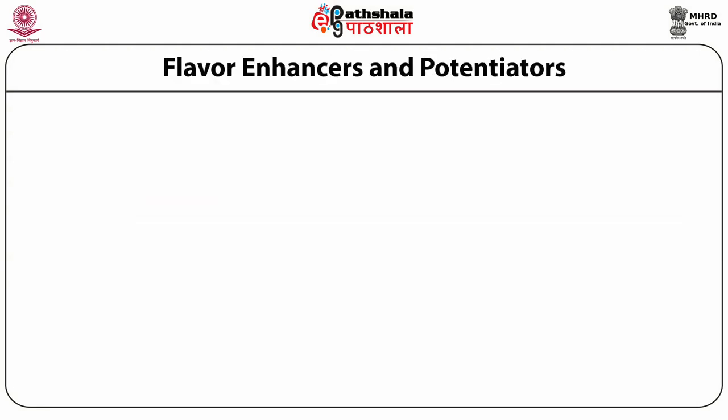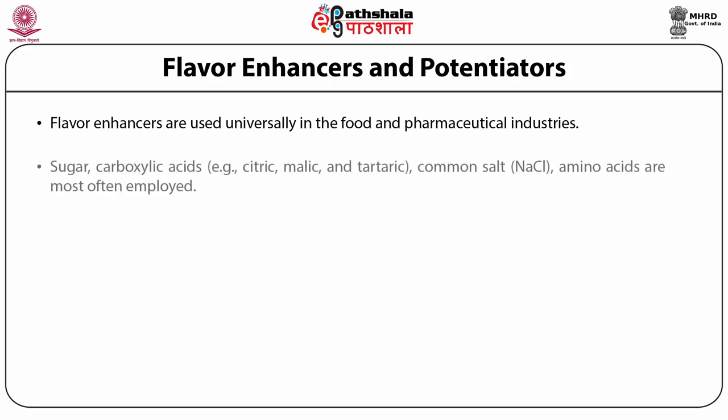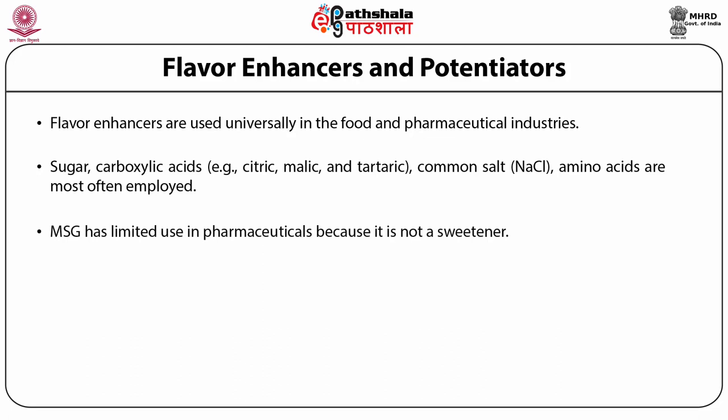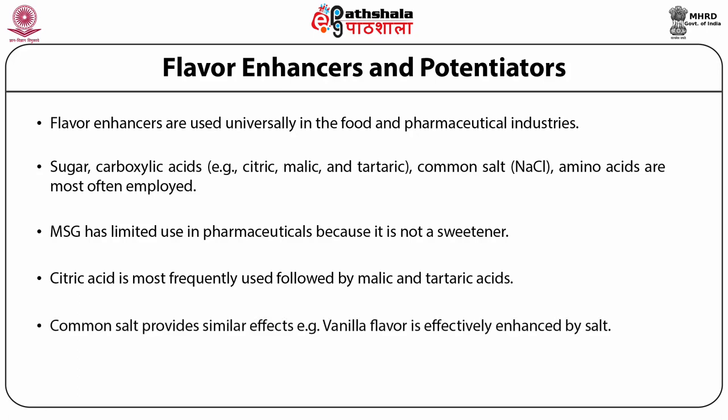Apart from flavors, there are certain flavor enhancers and potentiators that help in enhancing the efficacy of flavors used. Flavor enhancers are used universally in food and pharmaceutical industries. Sugars, carboxylic acids such as citric, malic and tartaric acid, common salt, and amino acids are most often employed. MSG (monosodium glutamate) has limited use in pharmaceuticals because it is not a sweetener. Citric acid is most frequently used, followed by malic acid and tartaric acid. Common salt also provides similar effects — for example, vanilla flavor is effectively enhanced by the addition of common salt.